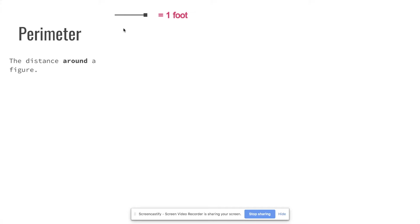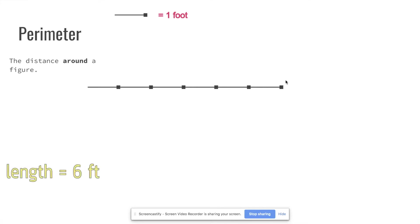Perimeter is the distance around a figure. This time let's say the symbol represents one foot. Counting across, we get one, two, three, four, five, six feet — so the length is six feet. The width is just one foot.